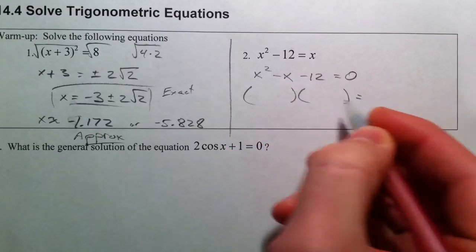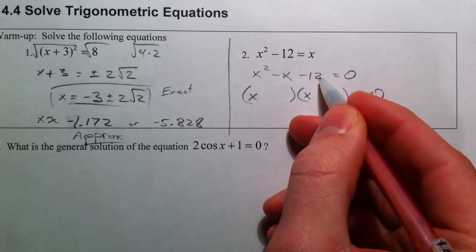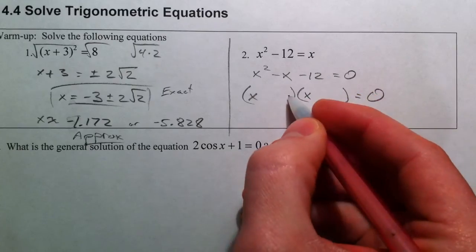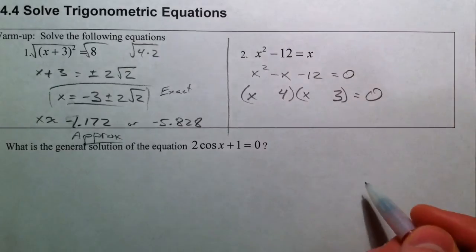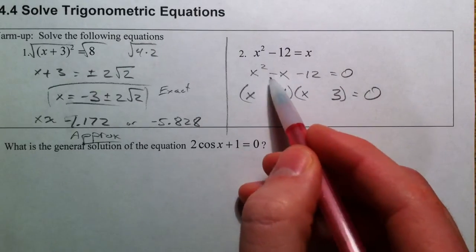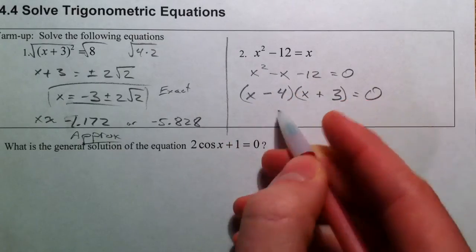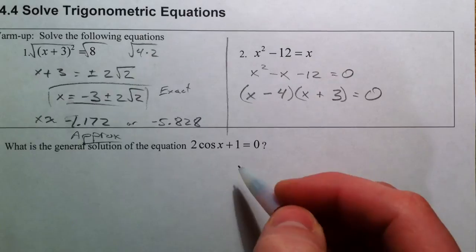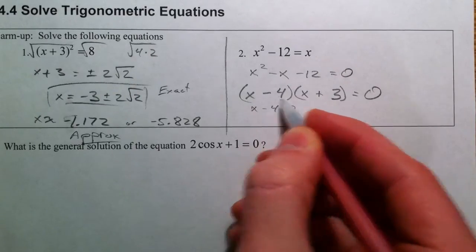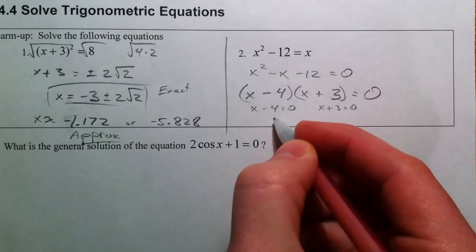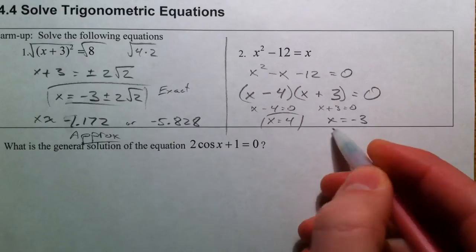What we're going to be doing with trig functions is the same thing. So what you'll look at is: we've got x and we've got x, so what multiplies to negative 12? 6 and 2, 4 and 3, 12 and 1. But we want them to add to negative 1, so we use negative 4 and positive 3 because negative 4 plus 3 is negative 1. So then x minus 4 equals 0 and x plus 3 equals 0, giving x equals 4 and x equals negative 3.